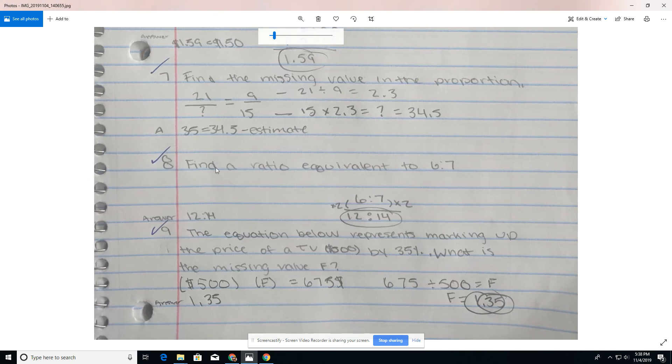Number eight, pretty straightforward, find a ratio equivalent to six to seven. So we write out six to seven, we find the equivalent ratio that we believe is the correct answer. We write it underneath. We show that it is the same factor to get to the second ratio for both sides. Six times two is 12, seven times two is 14. That describes a proportionate relationship. That's all the work we need to see for number eight.